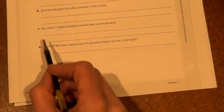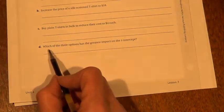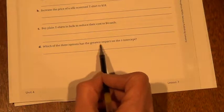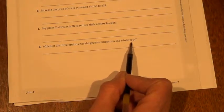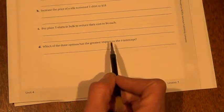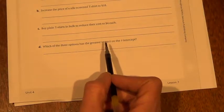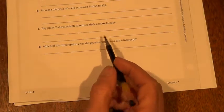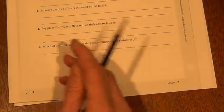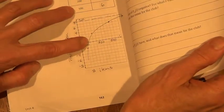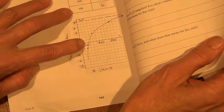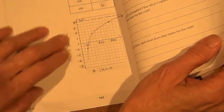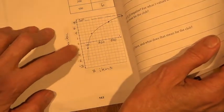Then the last question is having you compare those three options. Which of the three options has the greatest impact on the t-intercept? In other words, which one has the t-intercept intersecting at a lower amount? Remember the t-intercept is right here. So go ahead and graph those even if you need to use this graph. Graph them and see which one has the lowest t-intercept.